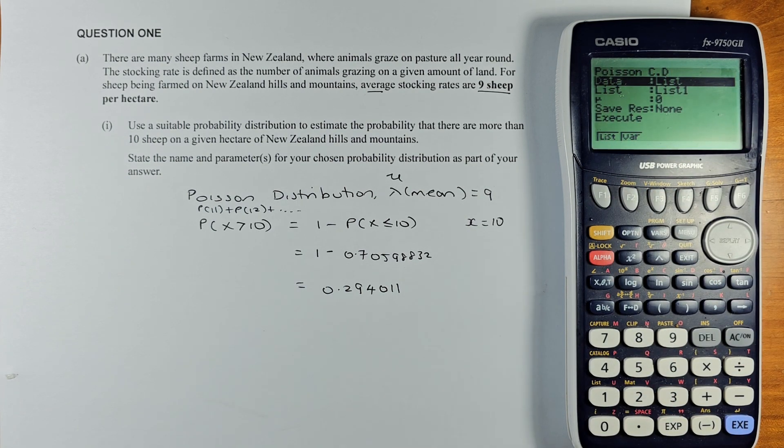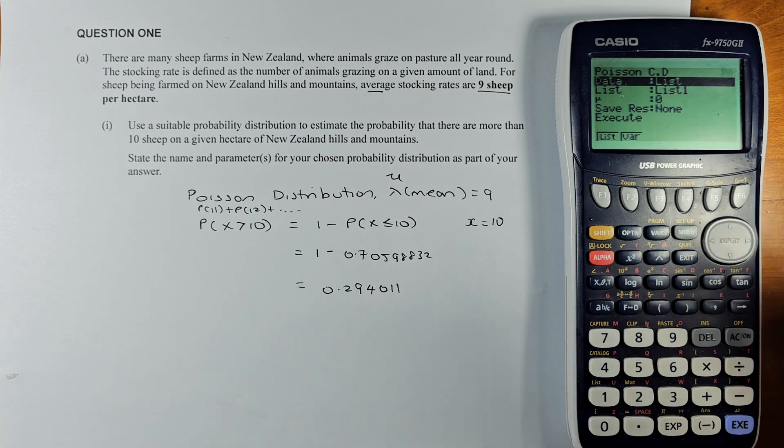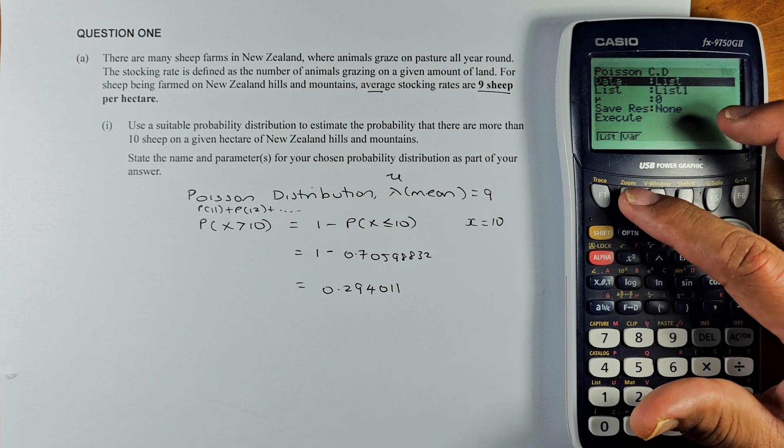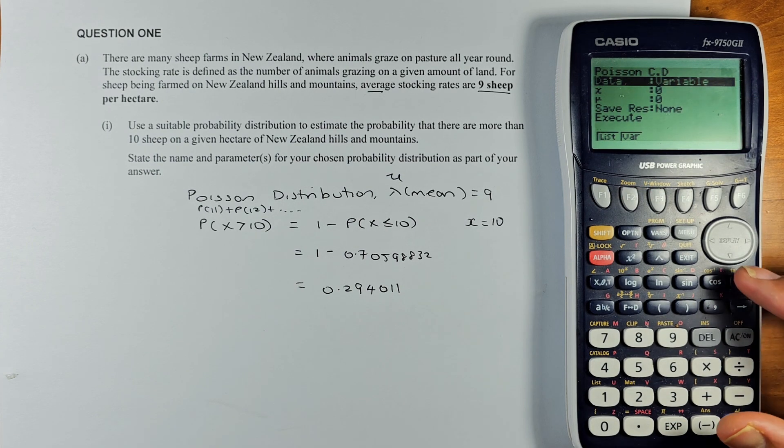Now we are going to key in the data. You know x is 10, lambda or nu is 9. So remember the first thing you do, you go to variable F2, variable. And now we're going to key in the data.